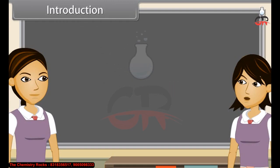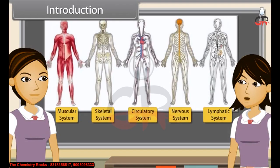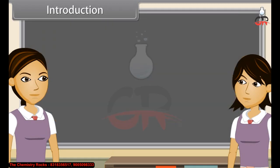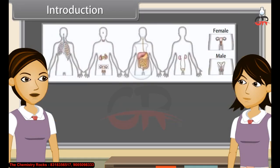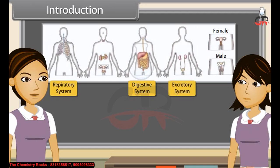As we already know, the body of higher animals like man is formed of a number of organ systems. Some examples are digestive system, respiratory system, circulatory system, excretory system, etc.